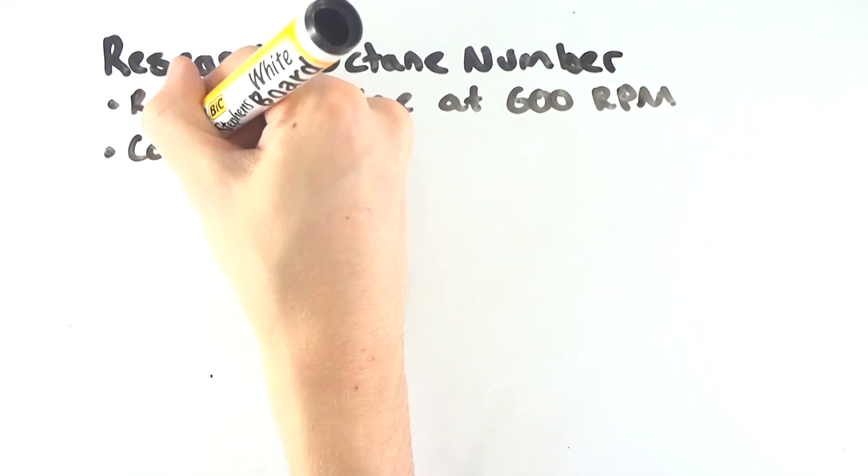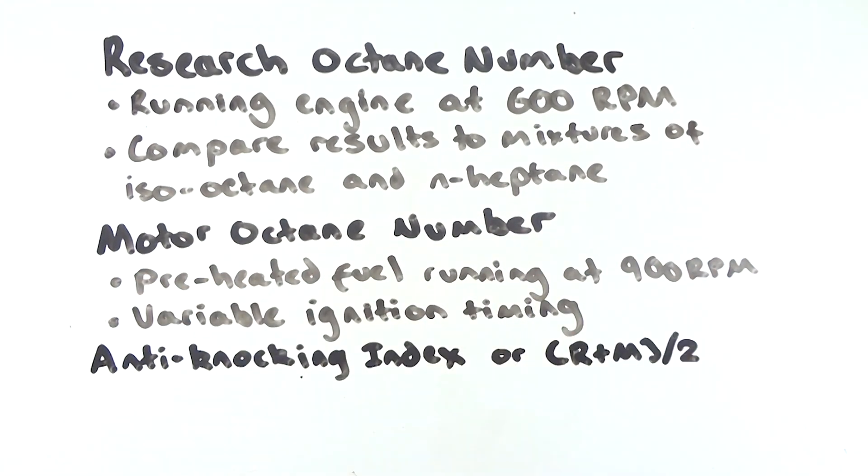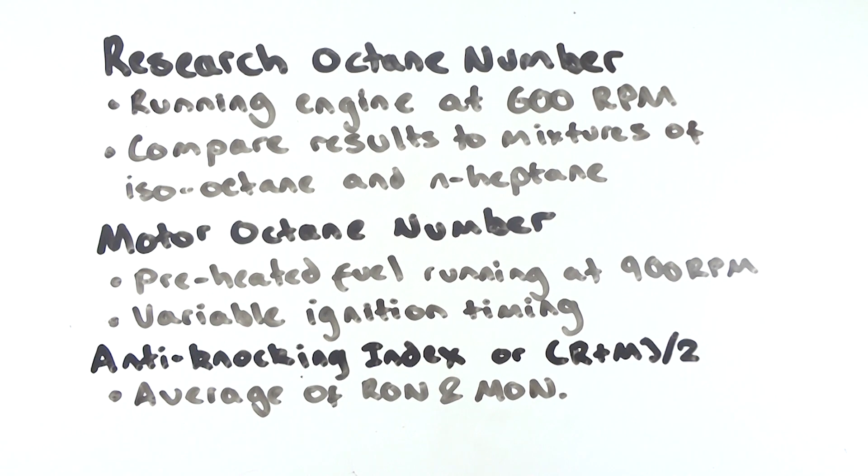Different countries use different measurement methods, with the research octane number being calculated through running fuel in a single cylinder engine running at 600 RPM. Motor octane number, on the other hand, is tested at running an engine at 900 RPM, but with the preheated fuel mixture and variable ignition timing.